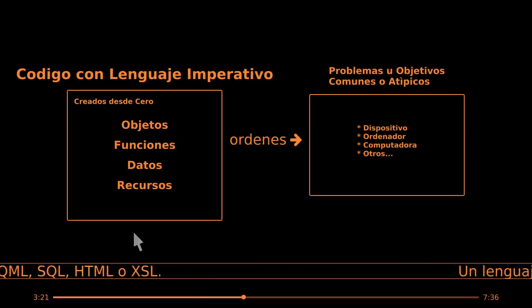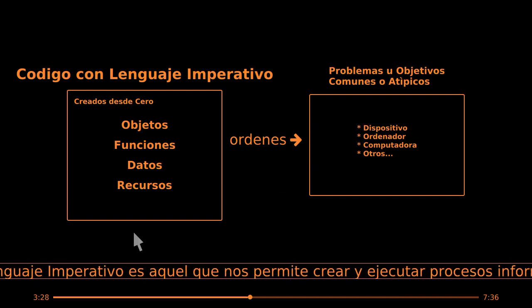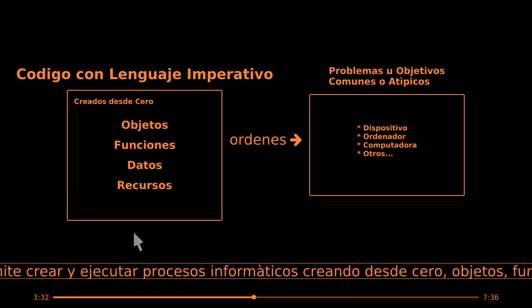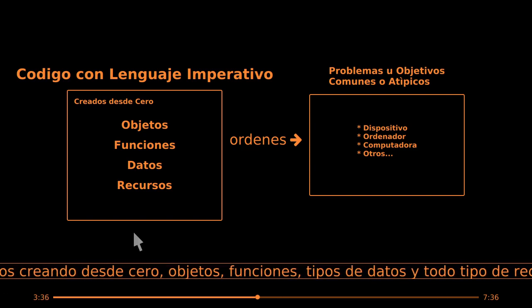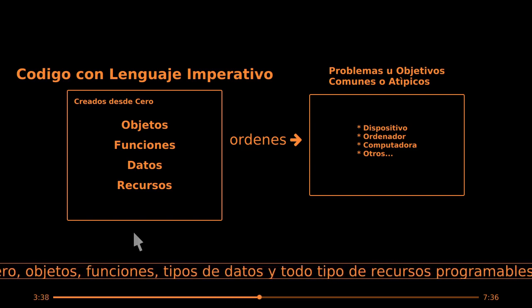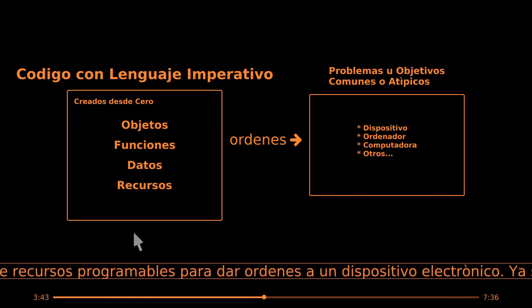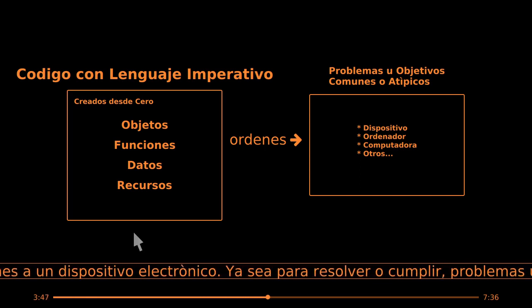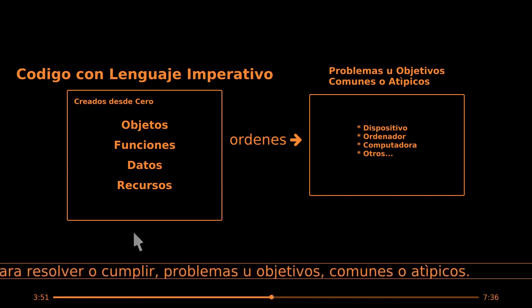Un lenguaje imperativo es aquel que nos permite crear y ejecutar procesos informáticos creando desde cero objetos, funciones, tipos de datos y todo tipo de recursos programables para dar órdenes a un dispositivo electrónico, ya sea para resolver o cumplir problemas u objetivos comunes o atípicos.